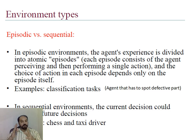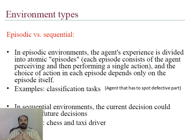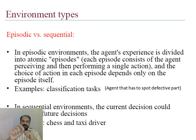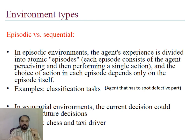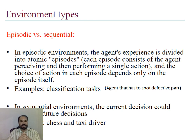The opposite is a sequential environment, where the current decision can affect future decisions. For example, chess and taxi driving are sequential environments. In chess, if you move even one piece, that move will have an effect on all next moves, all next decisions, and all next actions until checkmate. Such an environment is called a sequential environment.